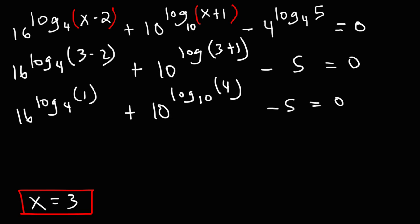Now, log of 1, regardless of what the base is, is 0. 4 to the 0 power is 1. So we're going to have 16 to the 0. This is going to be 4 minus 5 equals 0. Anything raised to the 0 power is 1. So 16 to the 0 power is 1. And 1 plus 4 is 5. 5 minus 5 is 0. And so the left side is equal to the right side, which means this is indeed the correct answer.